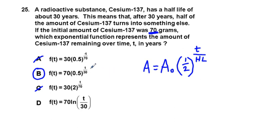Then we have time to the power of time over half-life, and we can see we have the T here in the numerator of this exponent and 30, which is the half-life, in the denominator. So B is our correct answer.